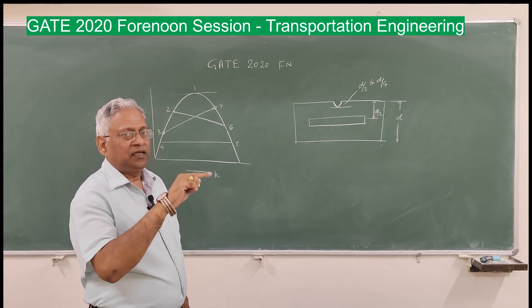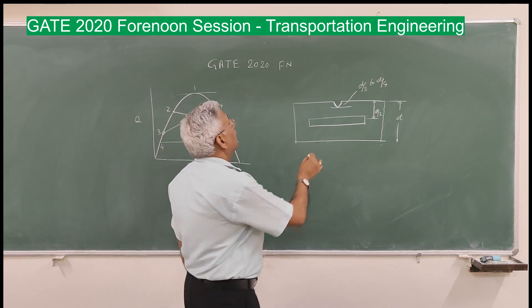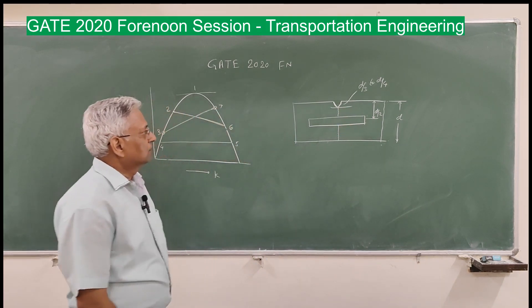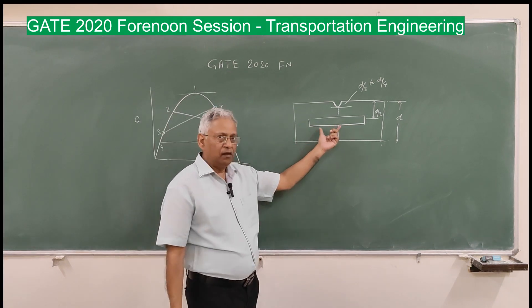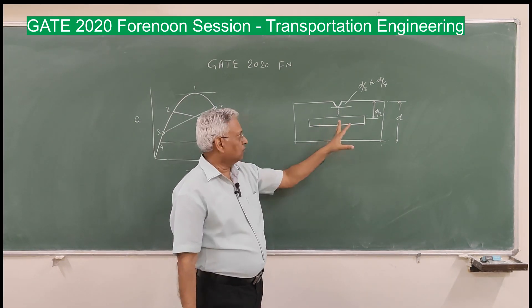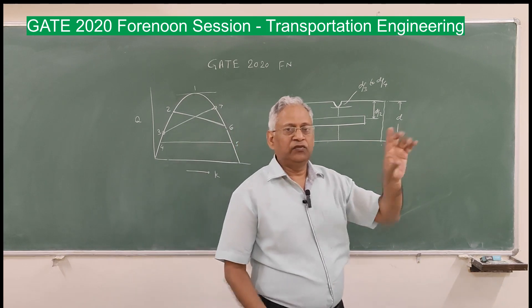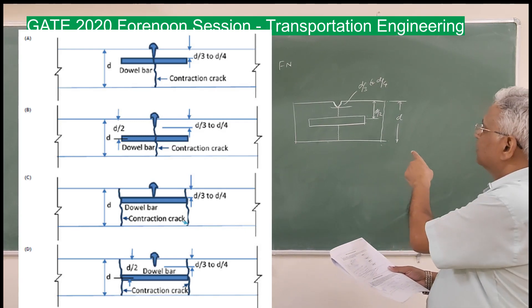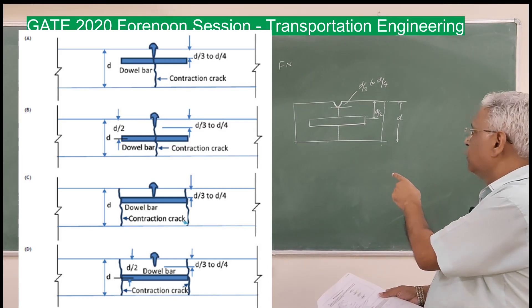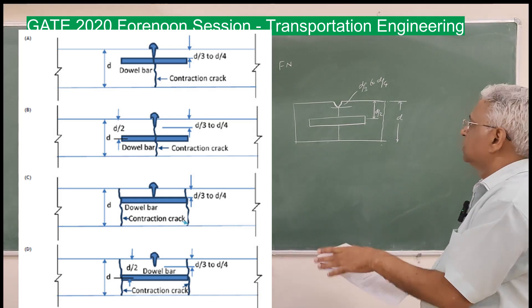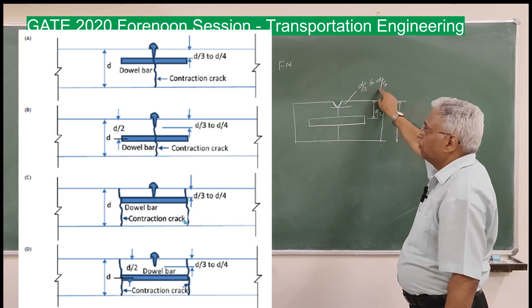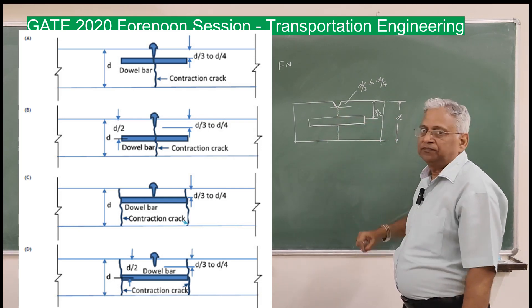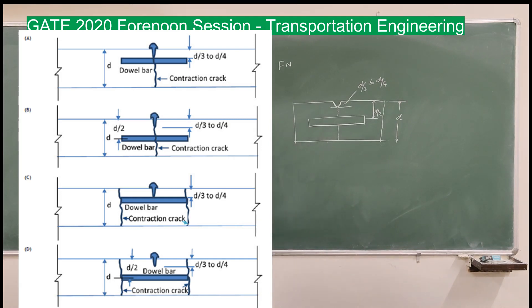This double bar helps in transfer of the load across this crack. So if you look at the options A, B, C, D, only B resembles this figure. Double bar is always provided at the mid-height, the groove is D by 3 to D by 4, and this crack develops at this joint. So option B is correct.